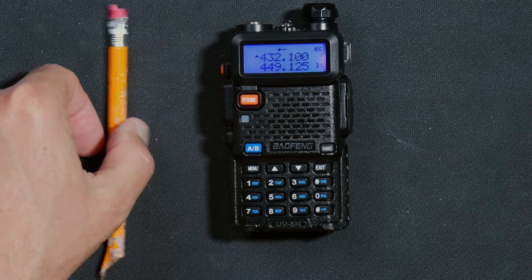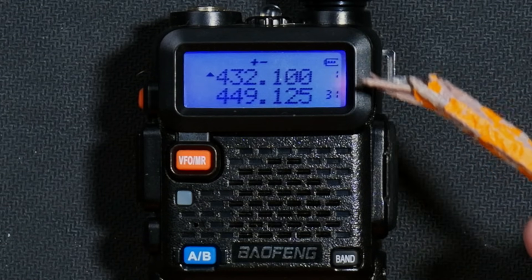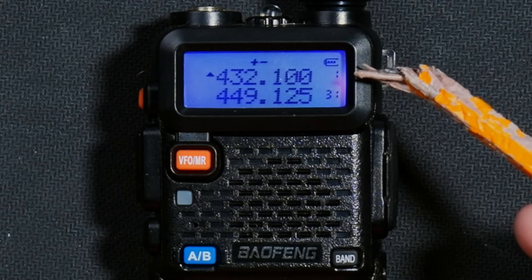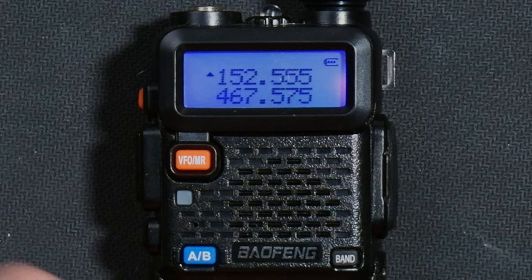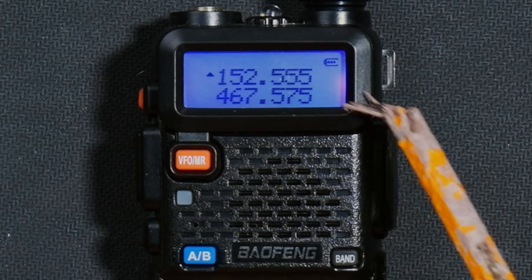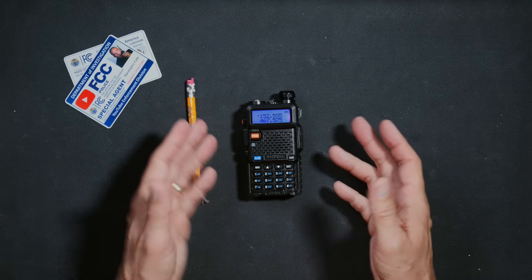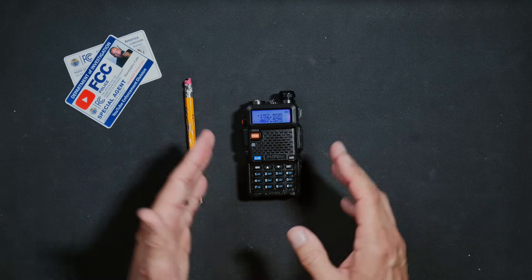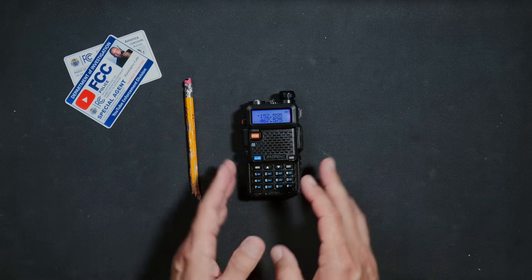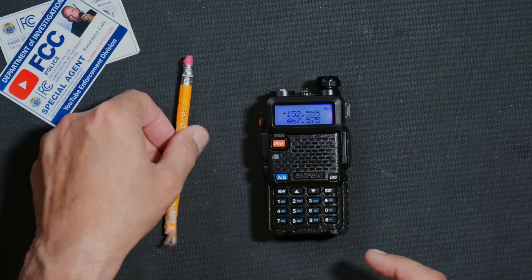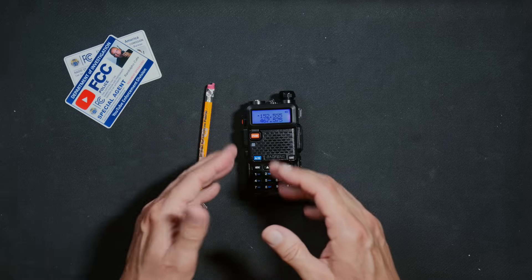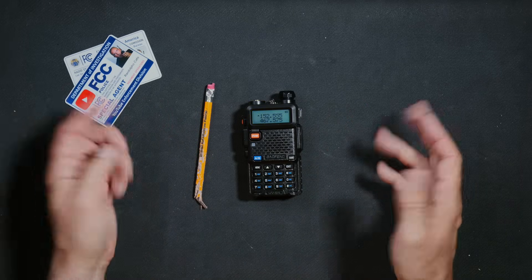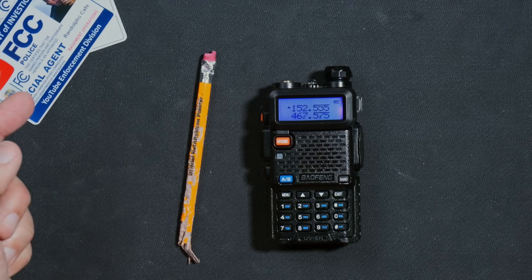When the radio is in channel mode, you will see these little channel indicators. When the radio is in VFO or frequency mode, you will see no little channel indicators. As an added bonus, the sexy Japanese radio voice lady will also tell you which mode you are in each time you press the big orange VFO MR button to help further reduce confusion. Channel mode.